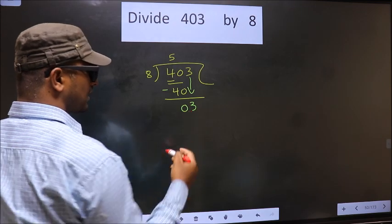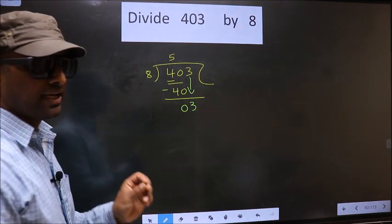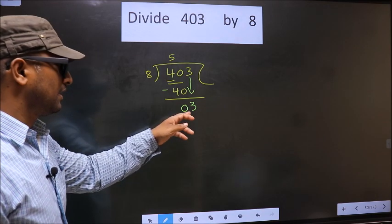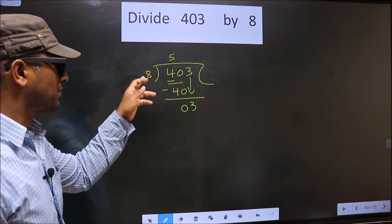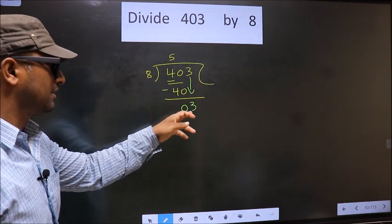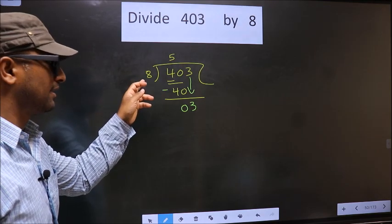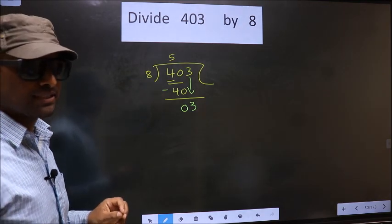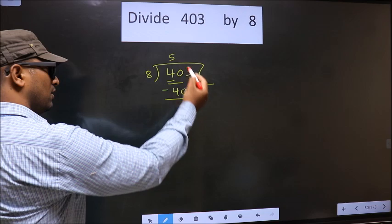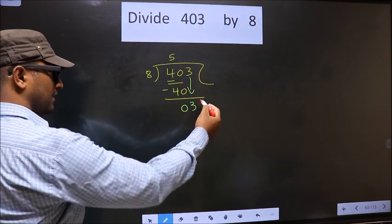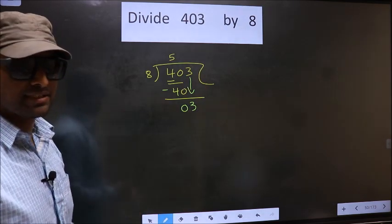This is where the mistake happens, and the mistake is this. Here we have 3, here 8. 3 is smaller than 8, so what many do is they put a dot and take zero here, which is wrong.